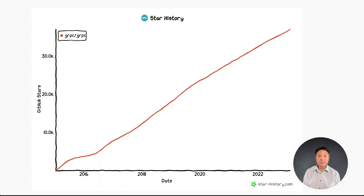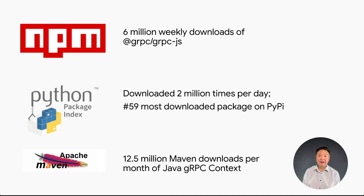A key example of how gRPC is being received by the developer community is the feedback shared on its main GitHub repository. The GitHub star count is a metric often used to measure how popular an open source project is, and we've had a sizable and steadily increasing star count since the framework was introduced. Beyond GitHub, gRPC packages are averaging 6 million weekly downloads from NPM. Looking at the Python Package Index, the gRPC.io package receives an average of 2 million downloads a day and is one of the most downloaded packages. On Apache Maven, gRPC is quite active with over 12 million downloads per month.